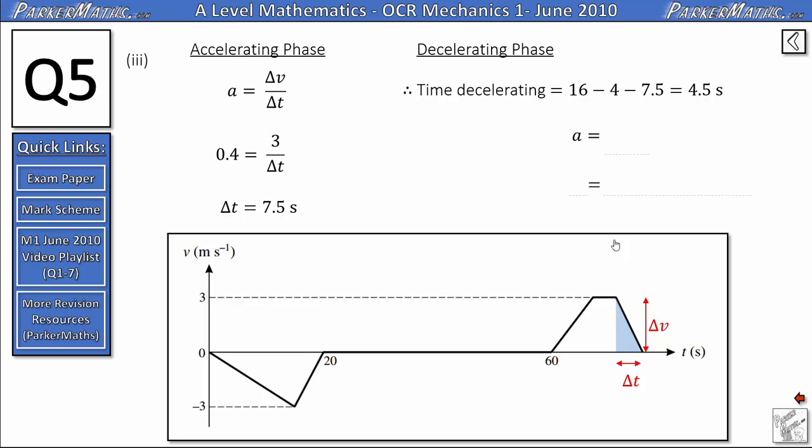So we get the distance it goes down, which is 3, divided by the distance across, which is 4.5. And if you divide the top and the bottom by 1.5, you end up with negative 2 thirds. So to 3 significant figures, the acceleration is minus 0.667 metres per second squared.